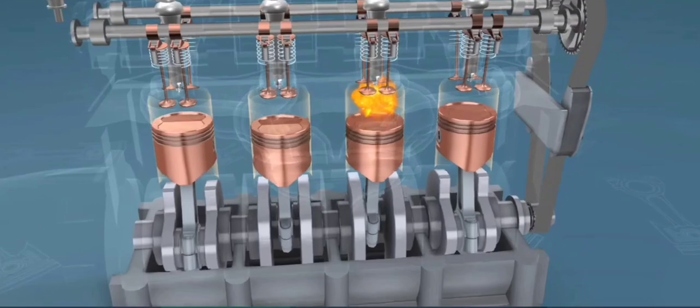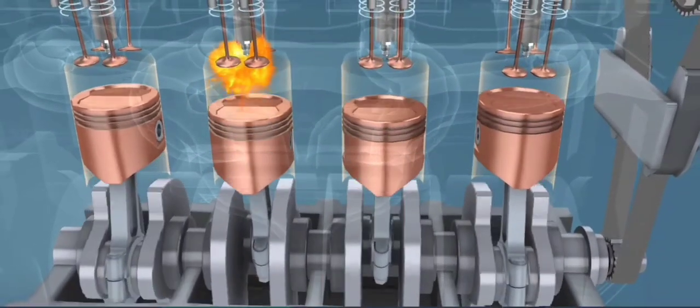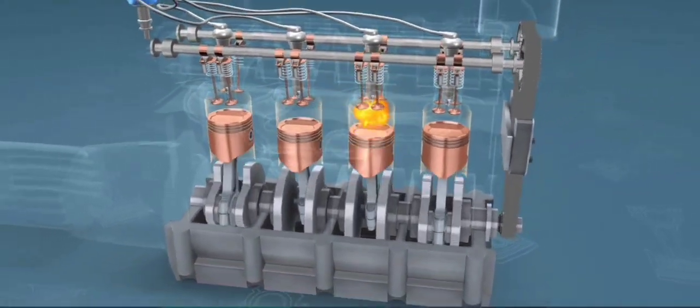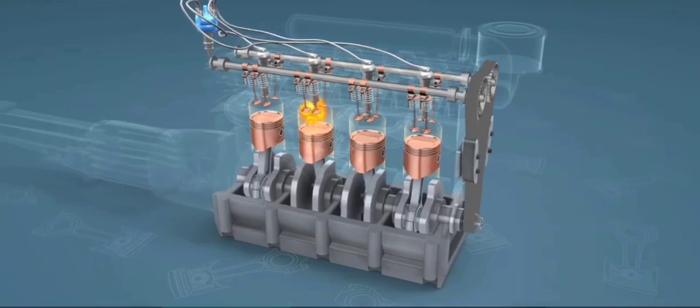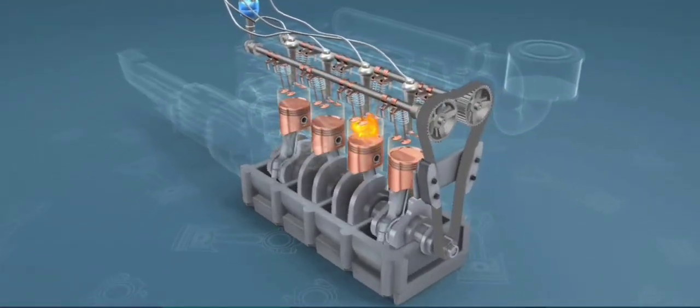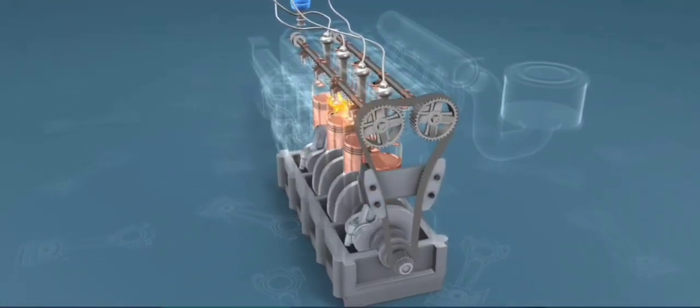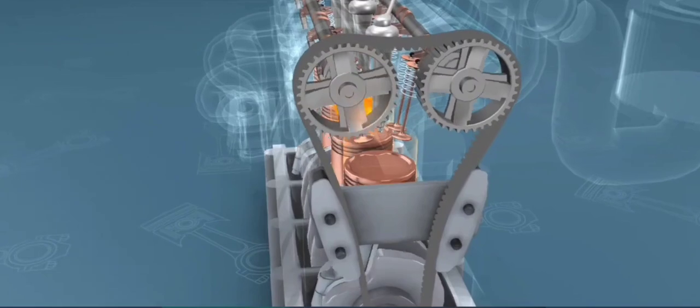The Daimler Reitwagen used a hot tube ignition system and the fuel known as ligroin to become the world's first vehicle powered by an internal combustion engine. It used a four-stroke engine based on Otto's design. The following year, Carl Benz produced a four-stroke engine automobile that is regarded as the first car.